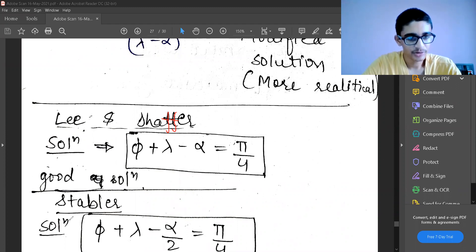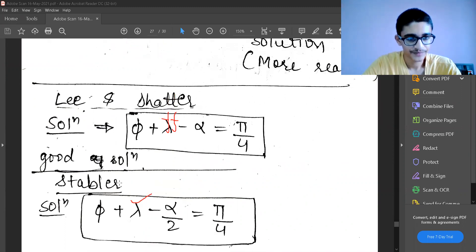And there is one more solution which is Stabler solution, which is given as φ + λ - α/2 = 45 degrees. So there are multiple solutions and these are very close to each other.